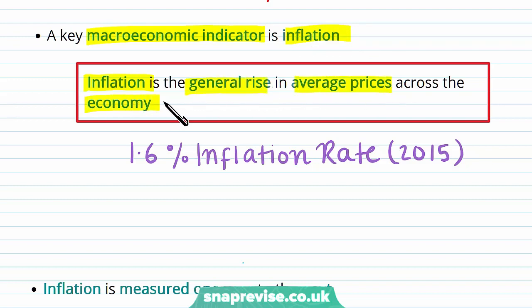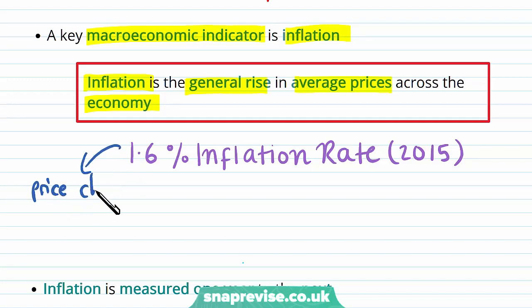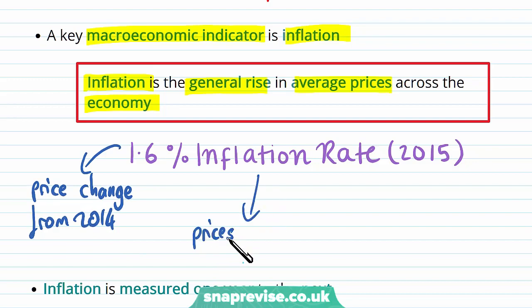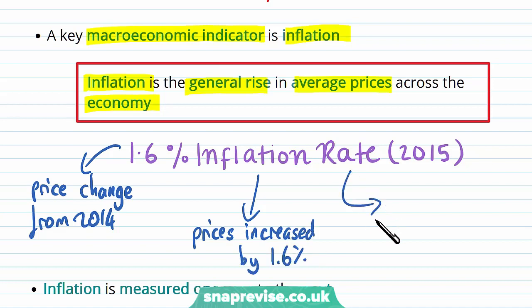Let's take a look at an inflation rate of 1.6% in 2015. This tells us three different things. First, it proves there is a price change from 2014. Because it's a positive number, it shows that prices have increased by 1.6%. And because our inflation rate is reflective of the price index — if you want to understand what the price index is, make sure you check out that index number video to learn how to calculate price level changes from year to year.